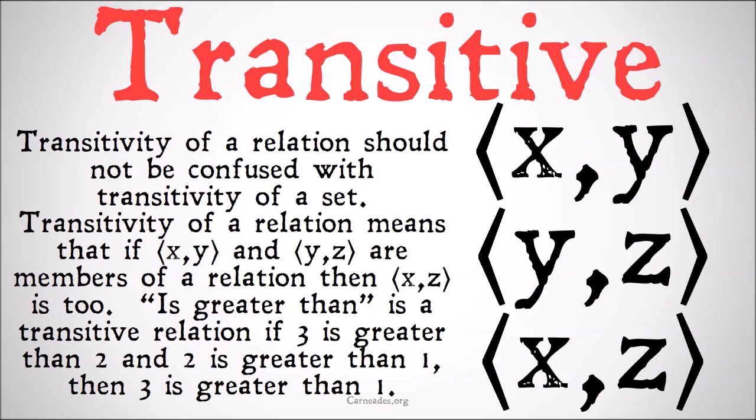Transitivity of a relation should not be confused with transitivity of a set — they are very different things. Transitivity of a relation means that if xy and yz are members of a relation, then xz is a member too.